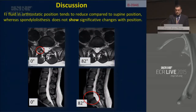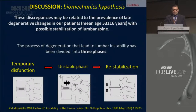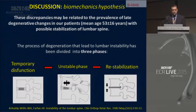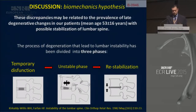The fluid in the orthostatic position tends to reduce compared to the supine position, whereas spondylolisthesis does not show significant change between positions. We propose a biomechanical hypothesis: these discrepancies may be related to the prevalence of late degenerative changes in our patients, with possible stabilization of the lumbar spine. The process of degeneration leading to lumbar instability has been divided into three phases: temporary dysfunction, unstable phase, and restabilization by arthrosis.